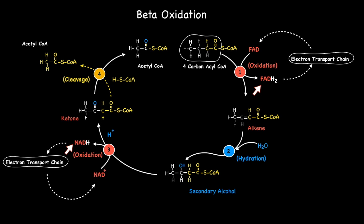The high energy electrons from both NADH and FADH2 act as a fuel source for the electron transport chain, ultimately driving the production of ATP through the process of oxidative phosphorylation.